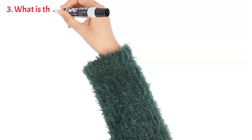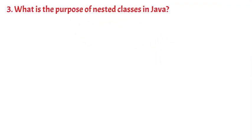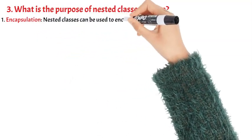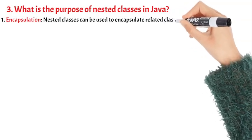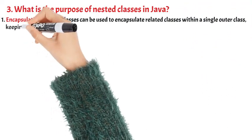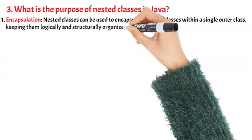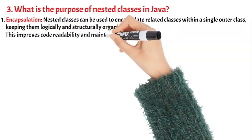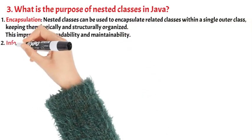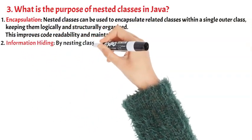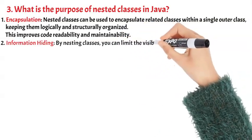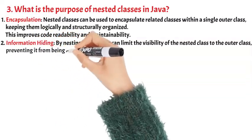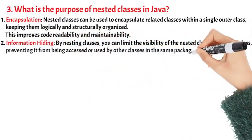What is the purpose of nested classes in Java? 1. Encapsulation: Nested Classes can be used to encapsulate related classes within a single outer class, keeping them logically and structurally organized. This improves code readability and maintainability. 2. Information Hiding: By nesting classes, you can limit the visibility of the nested class to the outer class, preventing it from being accessed or used by other classes in the same package.